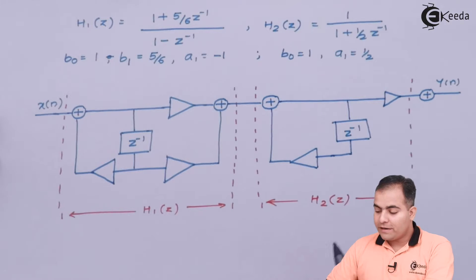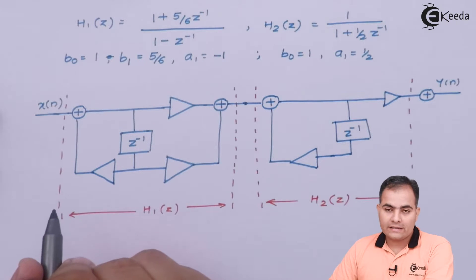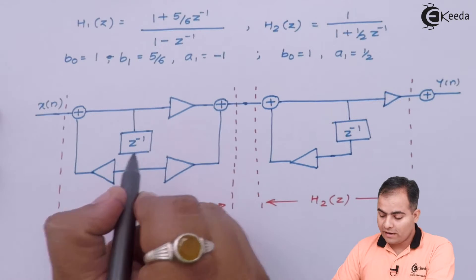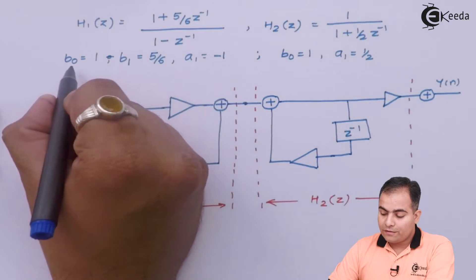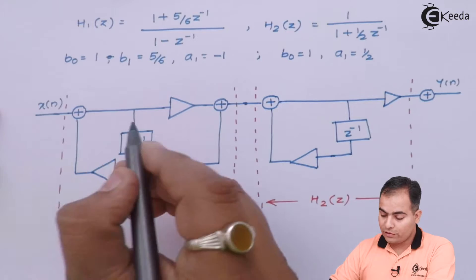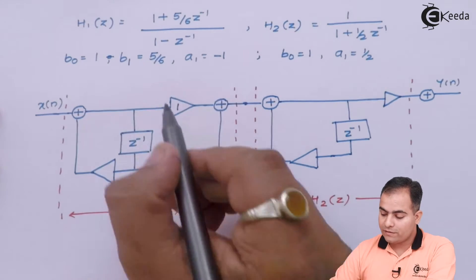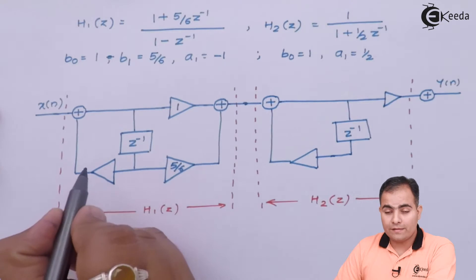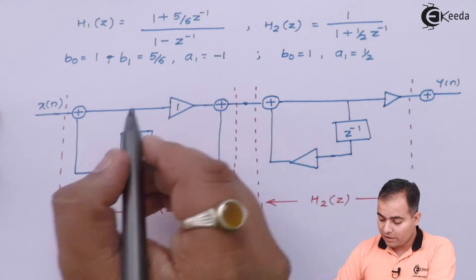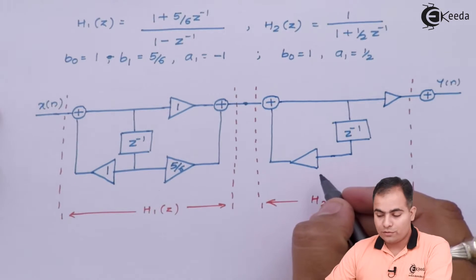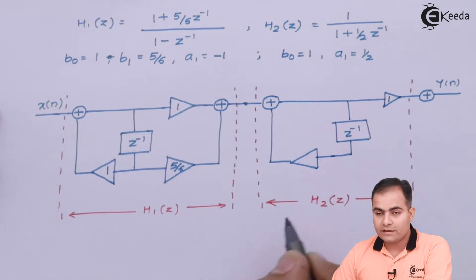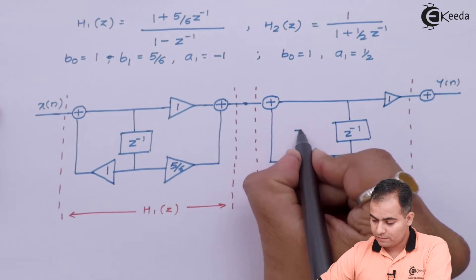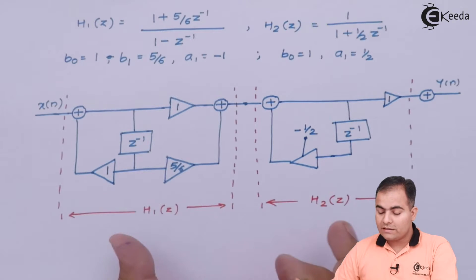The first block is my H1 and the next part is H2, and both are connected in series or in cascade. In DF2 structure, the right-hand side is always for the B coefficients and the left-hand side for A. For H1: B0 = 1, B1 = 5/6, and A1 = -1, so we write minus of minus 1, which is +1. For H2: B0 = 1 and A1 = 1/2, so after multiplying by minus we get -1/2. This completes the cascade form.